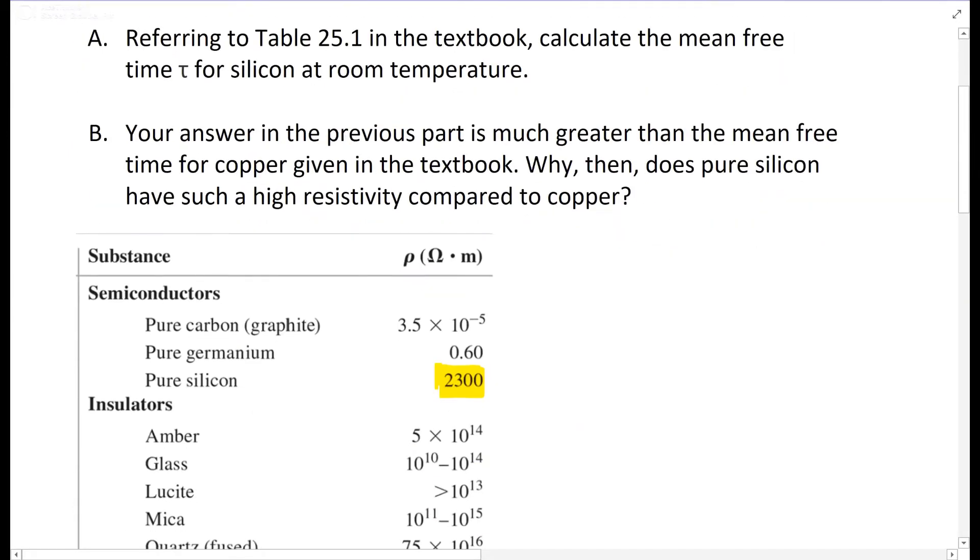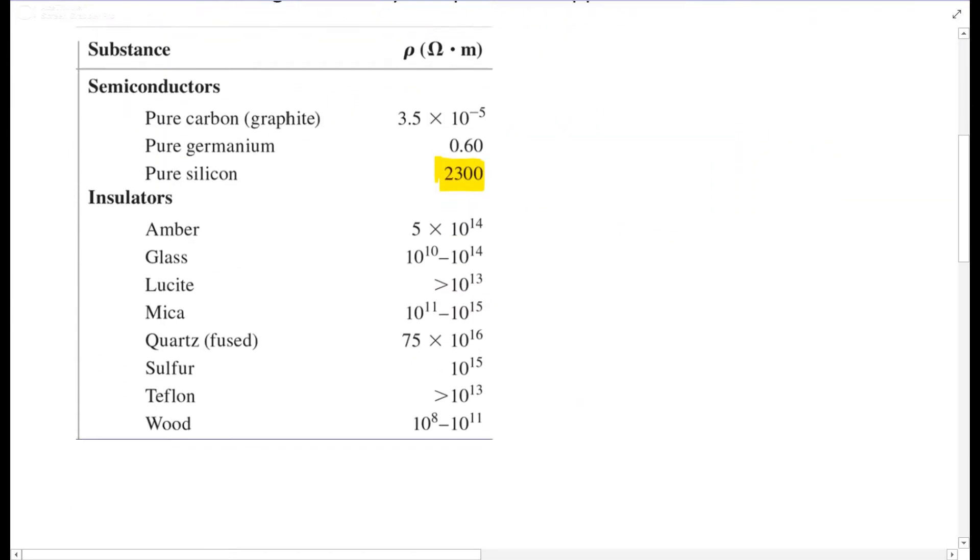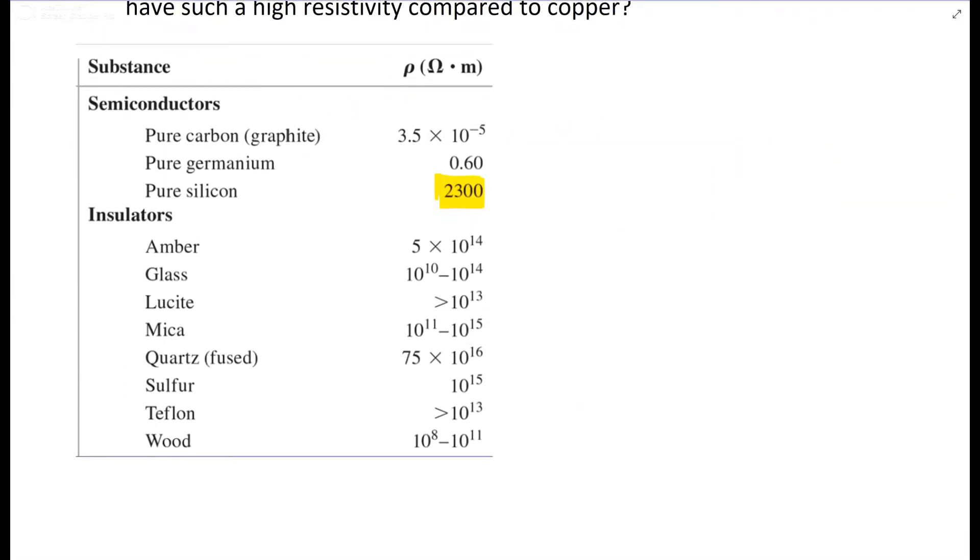The important part of the table is right here, pure silicon, what's highlighted in yellow. This gives you the resistivity of pure silicon, which is in ohm-meters.